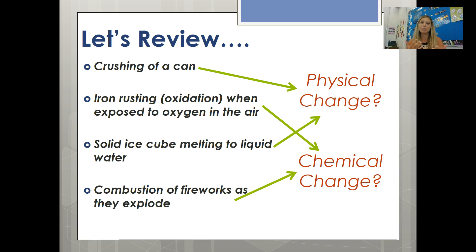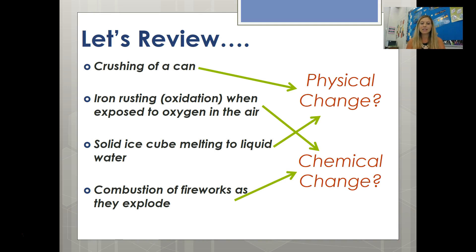A chemical change typically cannot be reversed without another chemical change. Iron rusting is called oxidation — when iron is exposed to oxygen in the air, that's an example of a chemical change: pure iron (Fe) becomes FeO2, so the atoms are being rearranged. A solid ice cube melting to liquid water is your classic physical change. The combustion of fireworks as they explode — any time you have combustion or burning of something, that causes a rearranging of atoms, which is a chemical change.